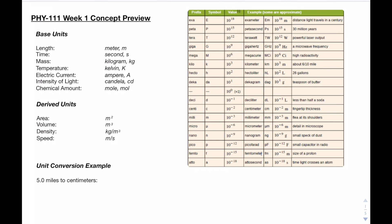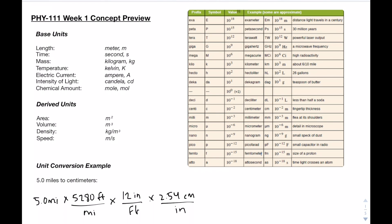Throughout physics, there's going to be a lot of converting between different units, so this is just a quick example of how to convert from 5 miles to centimeters. So we start with our 5 miles. We're going to multiply these by 5,280 feet per mile. Now we know that there are 12 inches in a foot, and similarly there are 2.54 centimeters in one inch. Now we've canceled out our miles, our feet, and our inches. We're left with centimeters, and the answer ends up being 643,737 centimeters.